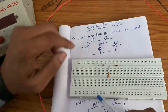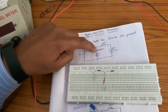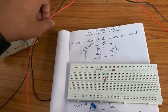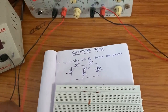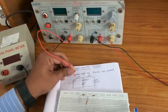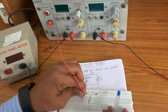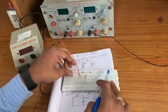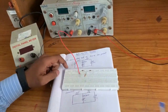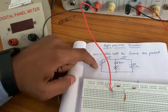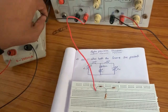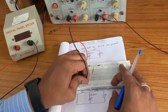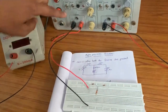Now I am connecting these three resistors — they are already connected. RPS positive is connected to the 1 kilo ohm first terminal. This is called the RPS positive. Then RPS negative is connected to ground. This channel 1 connection is now completed.